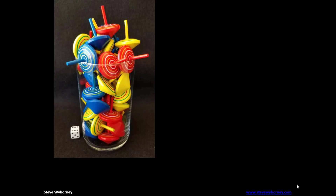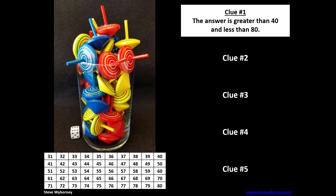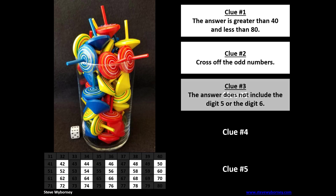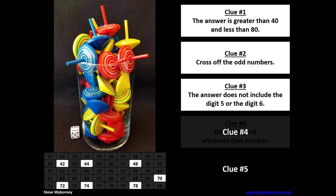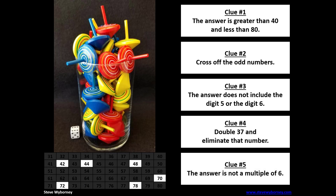Before the lesson, I like to click through all of the clues on the animated chart. Clue 1: the answer is greater than 40 and less than 80, so these numbers will be eliminated. Clue 2: cross off the odd numbers, so all of these odd numbers will be eliminated. Clue 3: the answer does not include the digit 5 or the digit 6, so all of these numbers will be eliminated. Clue 4: double 37 and eliminate that number — if I double 37, the result is 74, so this number will be eliminated. Clue 5: the answer is not a multiple of 6, so all of these multiples of 6 will be eliminated.